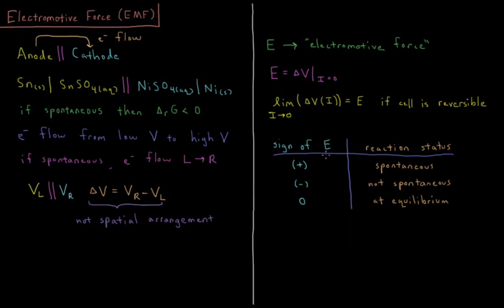What about the sign of the EMF versus the spontaneity of the reaction? If we have a positive EMF, that means the electrons are flowing from a low potential to a high potential, and that's what they want to do. So a positive EMF means we have a spontaneous reaction.